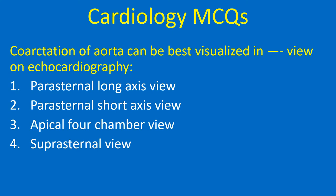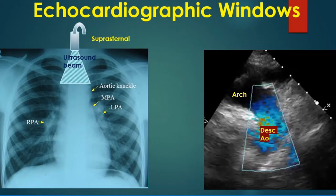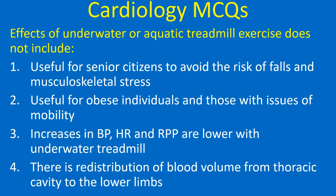Coarctation of aorta can be best visualized in which view on echocardiography? 1. Parasternal long axis view, 2. Parasternal short axis view, 3. Apical 4-chamber view, 4. Suprasternal view. Correct answer: 4. Suprasternal view. Suprasternal view is the standard view for visualizing the arch of the aorta and proximal part of the descending aorta, and hence the view for visualization of coarctation of aorta. Note: the 3-dimensional orientation of the echo beam is not exact in the diagram shown.